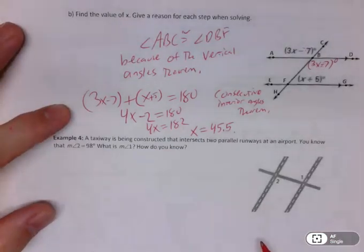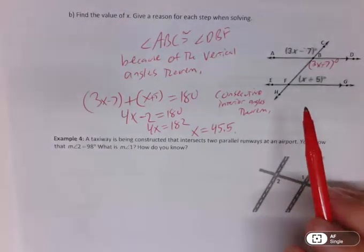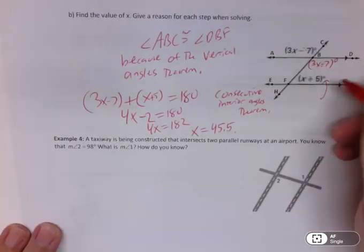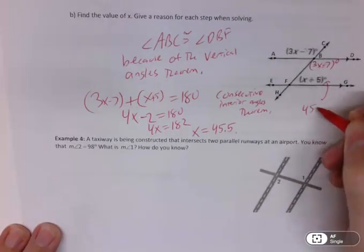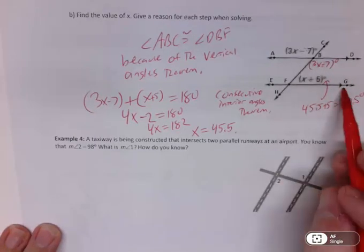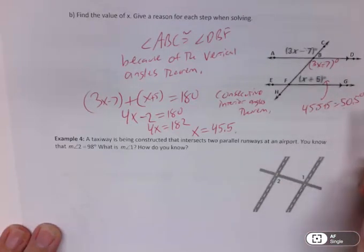So x is 45.5. Let's actually plug it back in and see if that makes sense. If I plug 45.5 back in here, I'm going to get 45.5 plus 5, which is 50.5. So this angle here, BFG, is 50.5 degrees.